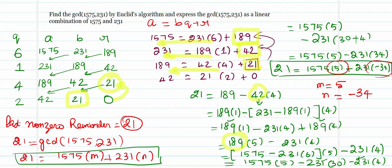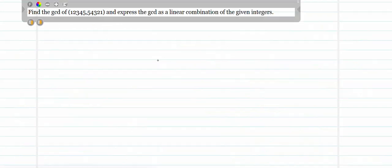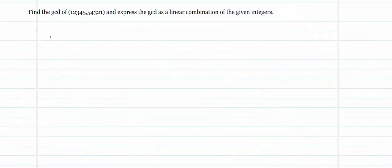We will do one more problem. The second problem: find the GCD of 12345 and 54321, and express the GCD as a linear combination of the given integers. The Euclid's algorithm part has already been explained in the previous video, so we begin with the division algorithm part, starting with the biggest number, 54321.